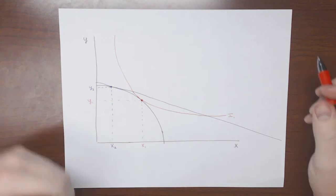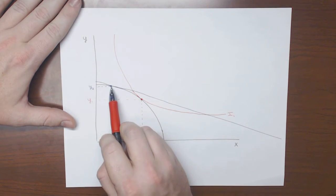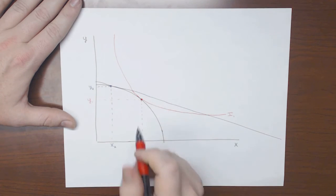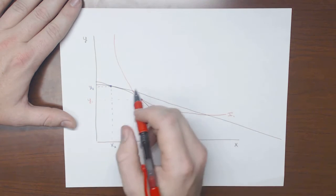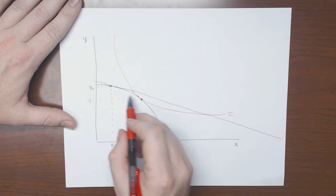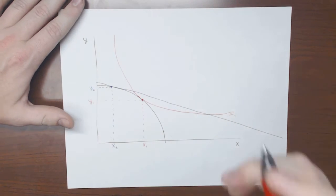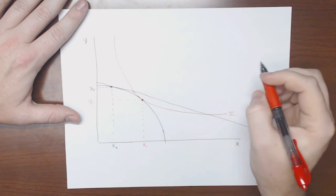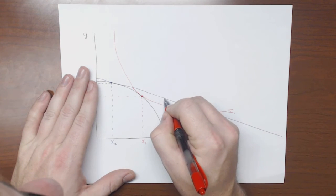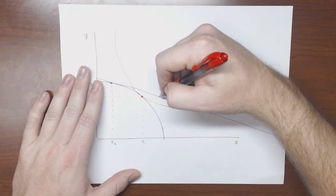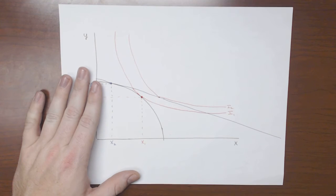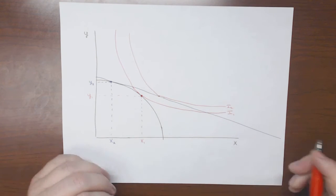Now notice that if we produce here at y2, x2, we can trade and move along this iso value curve. So if we produced here, then we can trade, we can sell, in this case y, to get x. So we can move this way to get that way. So we can now get to points outside or beyond our PPF curve. And we can use indifference curves to determine where exactly that will be. So given the shape of the indifference curve, we can say that it will be around here.